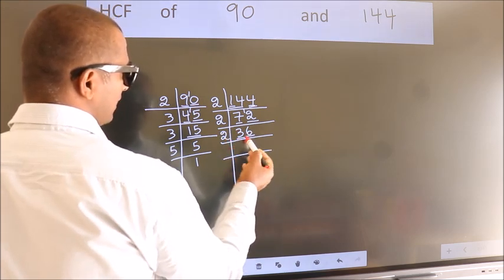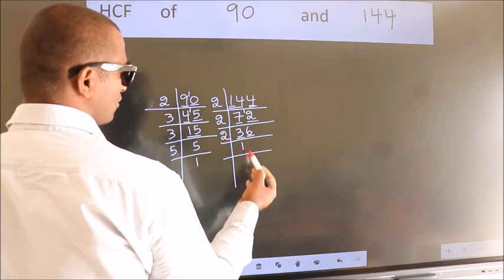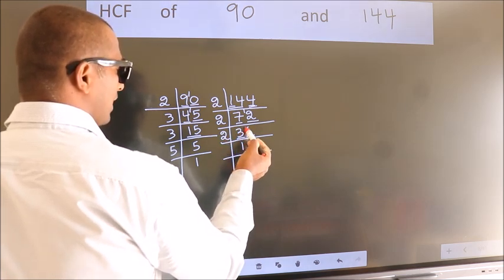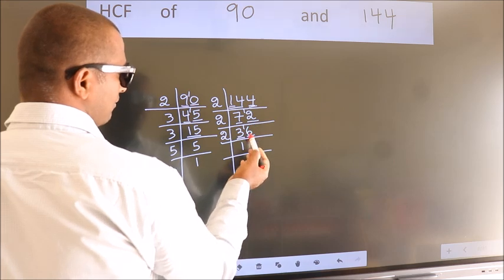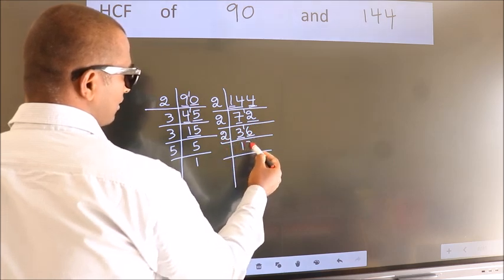First number 3. A number close to 3 in 2 table is 2 once 2. 3 minus 2, 1, 1 carried forward 16. When do we get 16 in 2 table? 2, 8, 16.